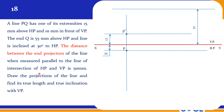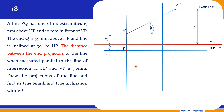Q' is at 55 mm above HP, so this is the locus of Q'. The angle is given as 30 degrees — that is the theta angle. So P'Q1' can be obtained directly. We also know the distance between end projectors is 50 mm. So P'Q1' is obtained using the 30-degree inclination, and this is the end projector distance of 50 mm.